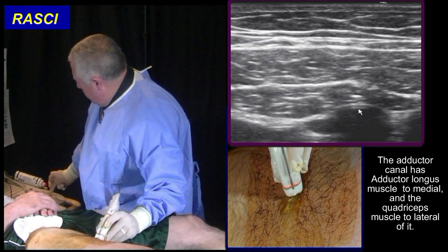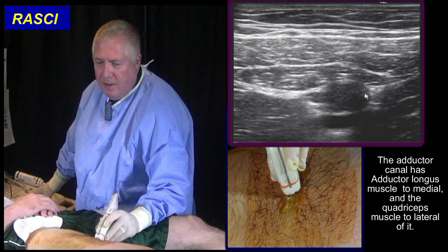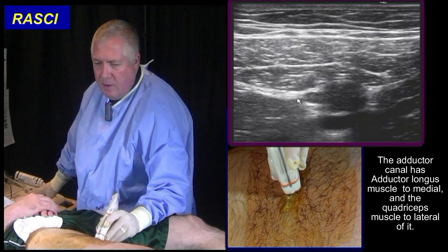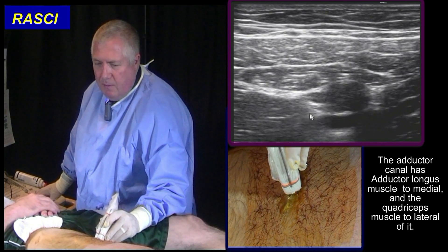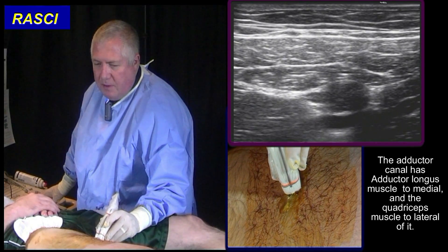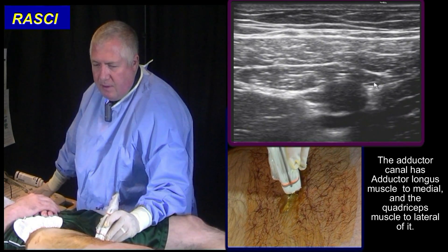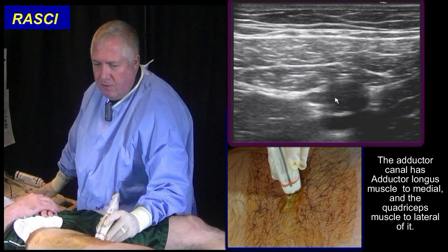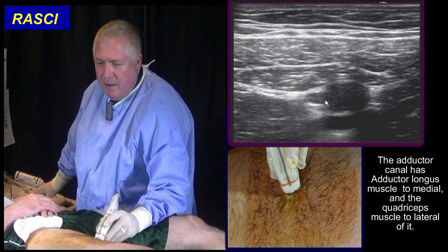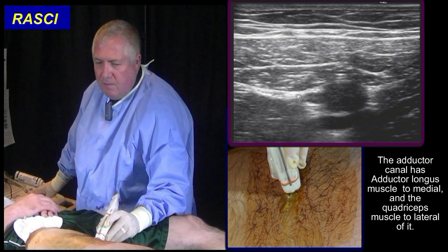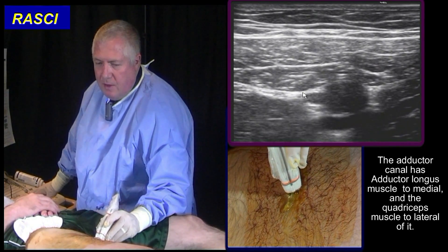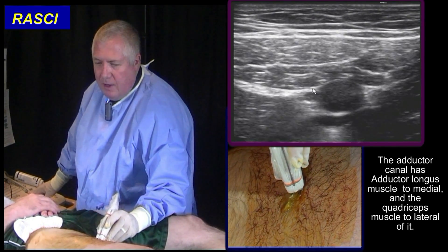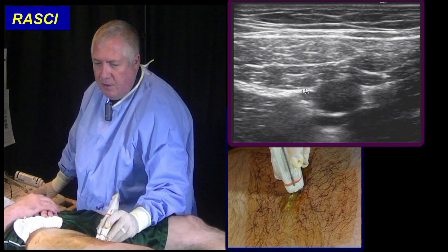The adductor canal itself is technically this space under this muscle, around here. We see a vein, we see the artery, and the saphenous nerve lies lateral and above that artery.